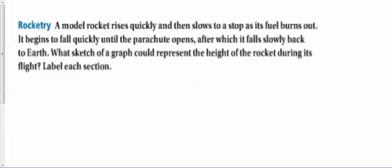All right, so looking at the next one, it says a model rocket rises quickly and then slows to a stop as its fuel burns out. It begins to fall quickly until the parachute opens, after which it falls slowly back to earth. What sketch of a graph could represent the height of the rocket during its flight? Label each section.